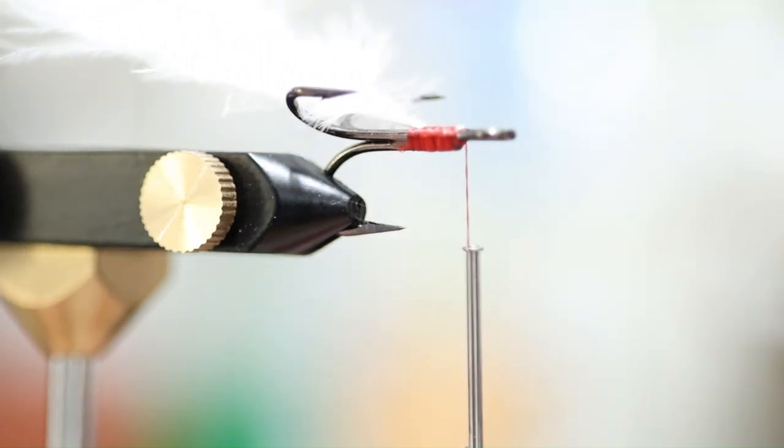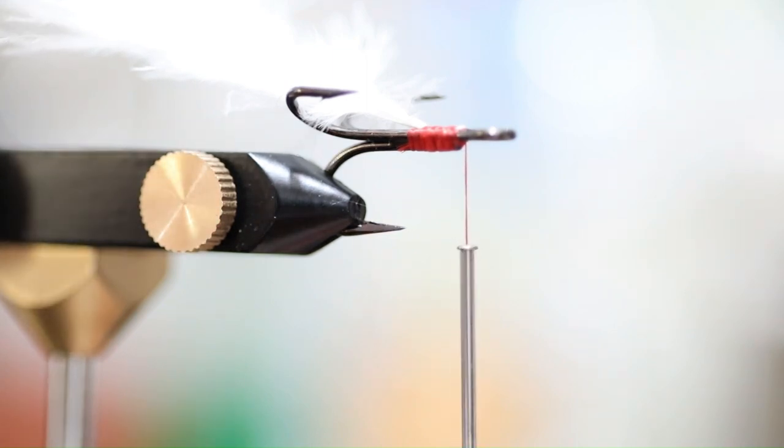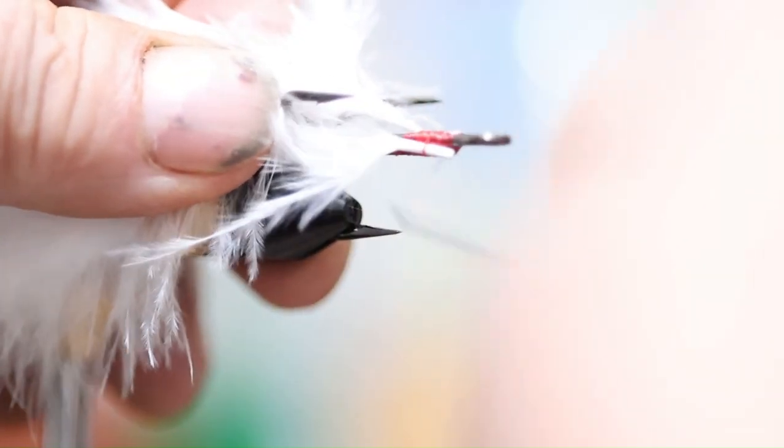Then we're going to take another feather. I already took off and cleared the stem off of the feathers there. Again you see it's all bending out, so we're going to put that one right here so it bends toward away from the hook. We're going to wrap it around six, seven times.